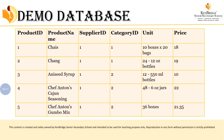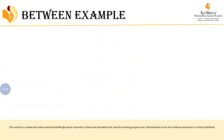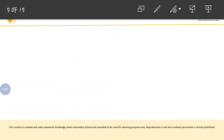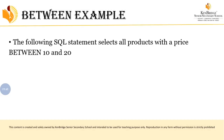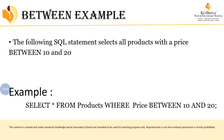Here I have given a demo database — this is a product table. We have totally six attributes: product ID, product name, supplier ID, category ID, unit, and price. Just look at the queries I have used here. This query is going to select all the products with a price between 10 and 20.